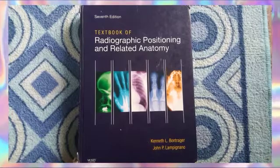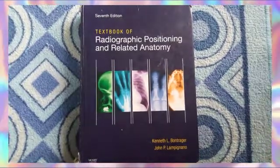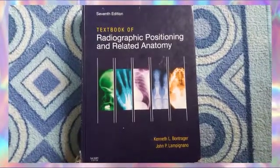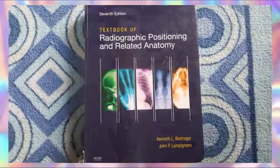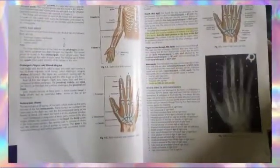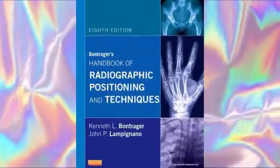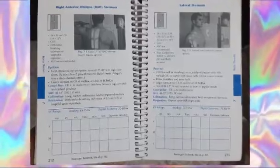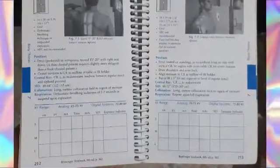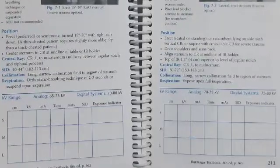Bontrager is also, clearly, because it's only one book, way less weight to carry around. In general, both books have a really nice layout — no complaints there. The Bontrager handbook has a really nice column table for inputting different exposures and other factors, namely the centimeters, kV, mA, time, mAs, SID, and even the exposure indicator or index.